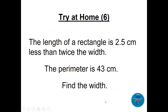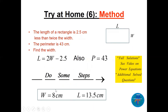There is also a try-at-home word problem involving a rectangle. Remember the perimeter of a rectangle is the total length of all sides: L + W + L + W. Set up the equation using the given information and solve.